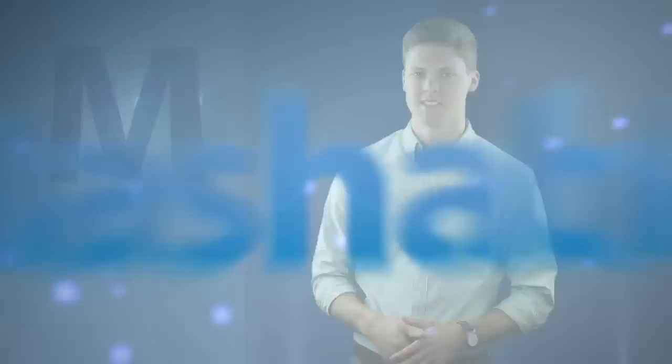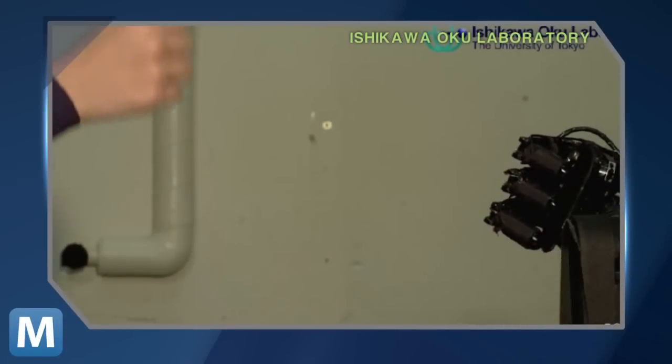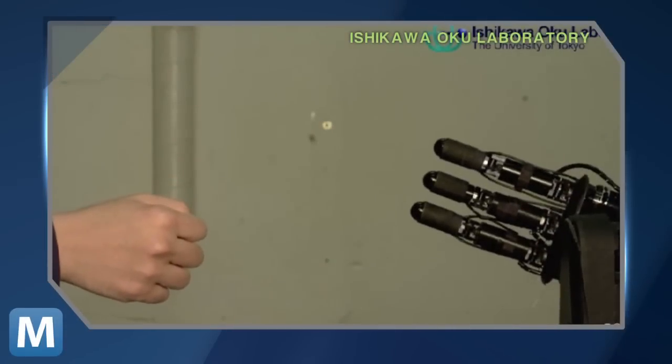And it's attached to a camera that detects which choice its human challenger makes as it happens. That millisecond is enough time for the robotic hand to come up with the appropriate counter, every time.